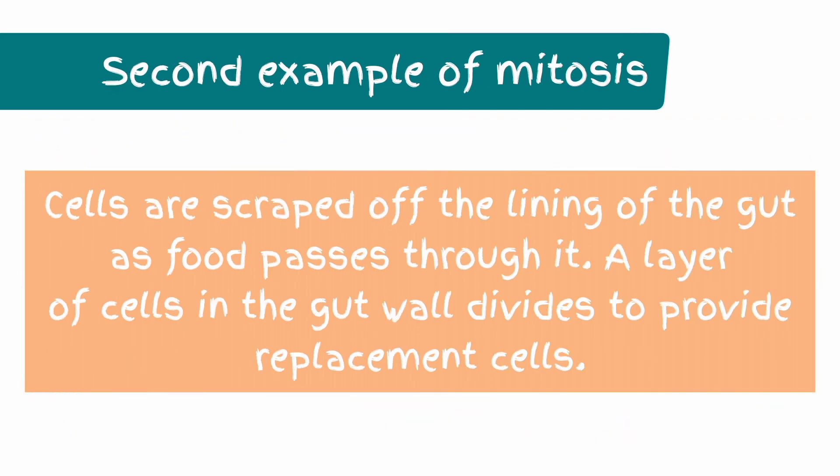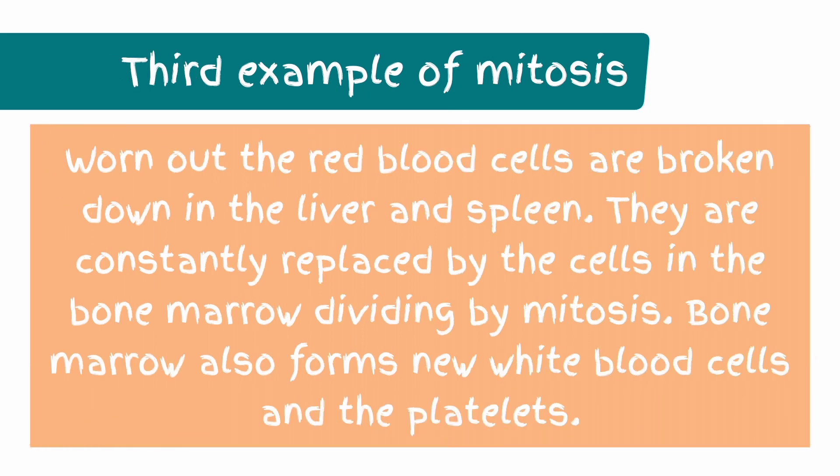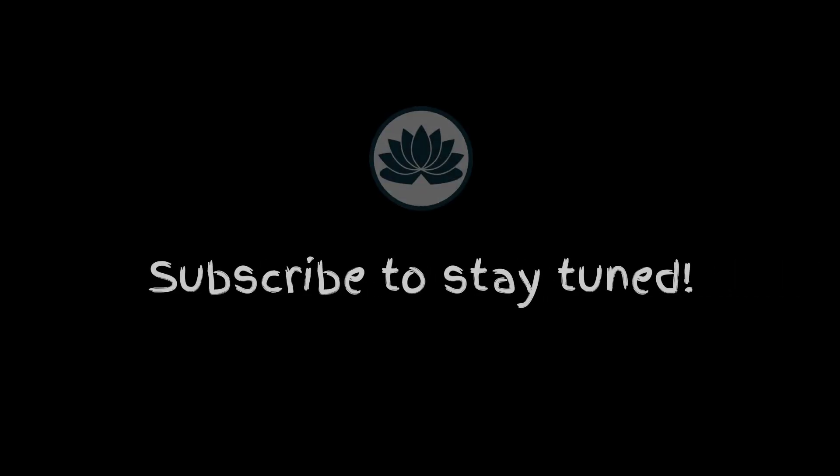Cells are scraped off the lining of the gut as food passes through it; a layer of cells in the gut wall divides to provide replacement cells. Worn-out red blood cells are broken down in the liver and spleen, and are constantly replaced by cells in the bone marrow dividing by mitosis. Bone marrow also forms new white blood cells and platelets.